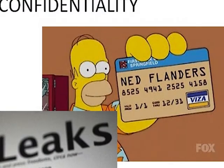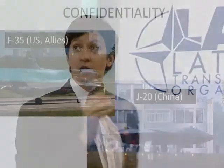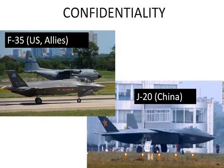As Homer Simpson is currently doing here using Ed Flanders' credit card. Of course, attacks on confidentiality can also have strategic impact. So what we see here, on the upper left corner, is a US F-35. On the right, on the bottom, is a Chinese J-20.